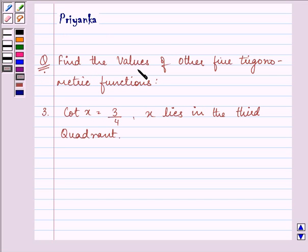Find the values of other five trigonometric functions when the value of cot x is given to us as 3 by 4, and also it's given to us that x lies in the third quadrant.